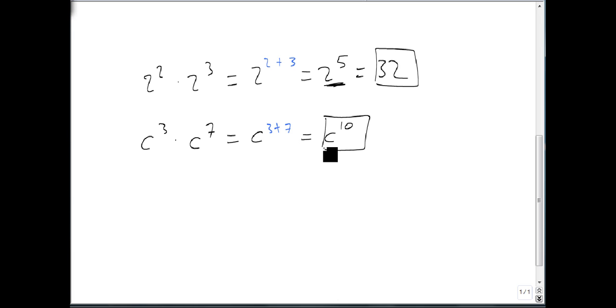One final problem. Suppose that we have something a little more complicated. Three z squared times four z to the fourth. Well, here, we're going to take our numbers, and we're going to separate them from our variables so we can combine our bases. So we end up with three times four, and z squared times z to the fourth.